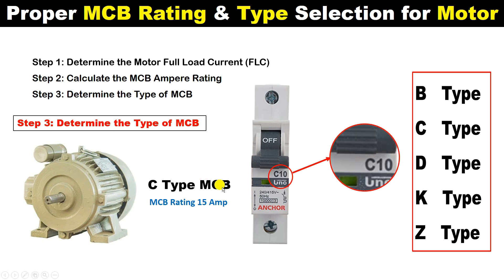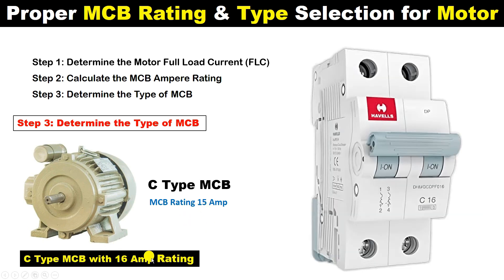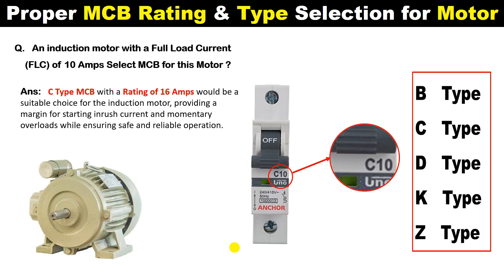So now we know that we have to use a C type MCB and the rating will be 15 ampere. However, if you go to the market to buy an MCB, you won't find a 15 ampere MCB — you have to buy one of more than 15 ampere. You can find a 16 ampere MCB in the market. So the MCB you must use will be C type with a current rating of 16 ampere. I hope you understood how to do the selection of an MCB for a motor.